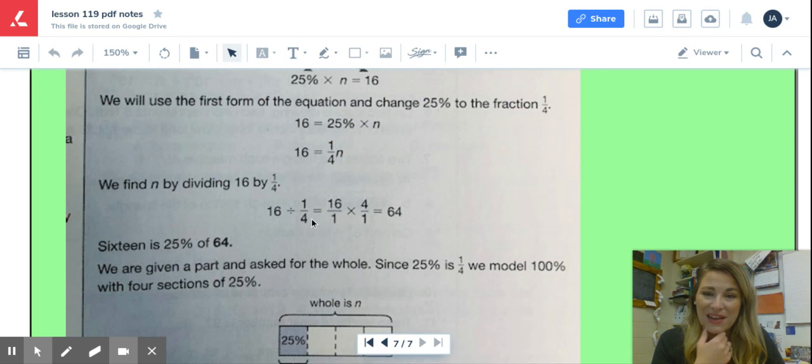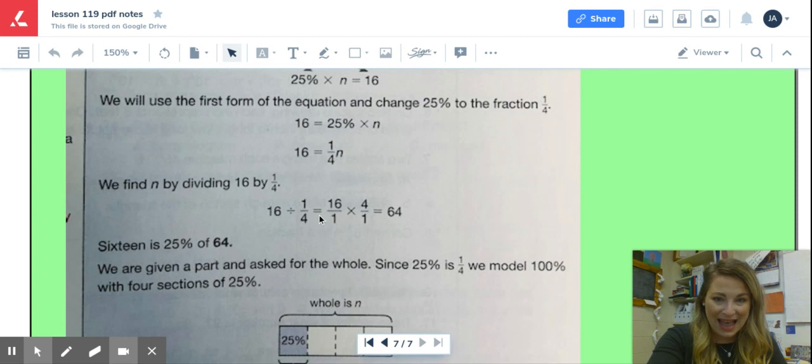16 divided by one fourth is one of those keep change flip problems where we multiply. When we're dividing fractions, we actually multiply by the reciprocal. So that's what they've done right here. 16 divided by one fourth is actually 16 over 1 because that's the same as this times 4 over 1 because that is the flip or the reciprocal of this. When we do that work, we find that our answer is 64.